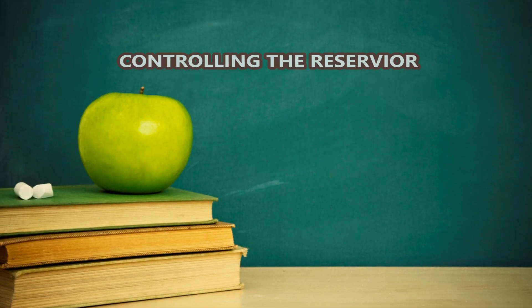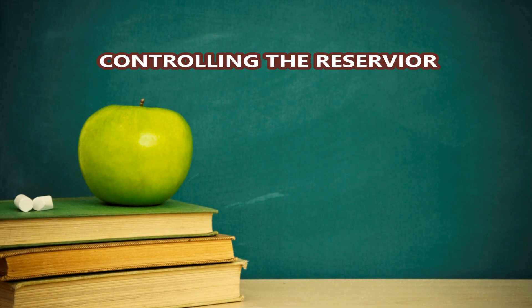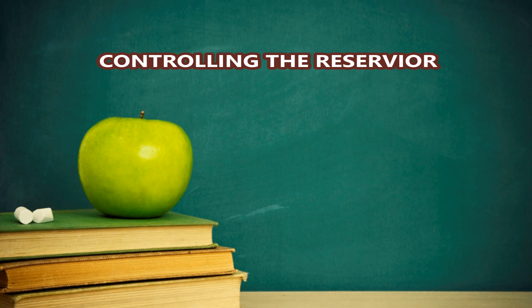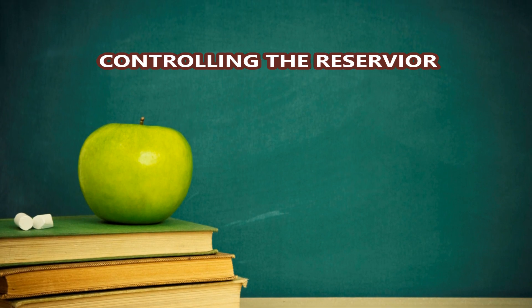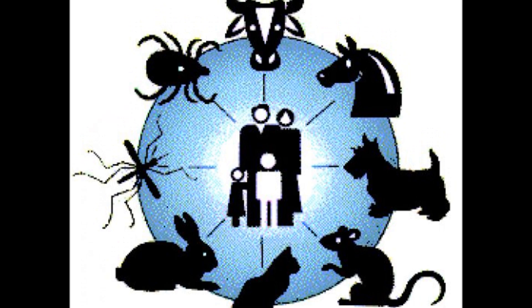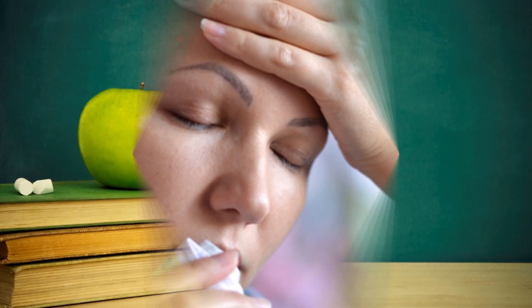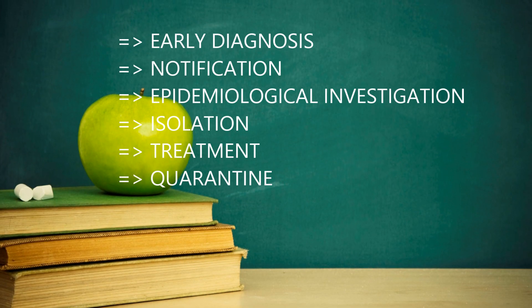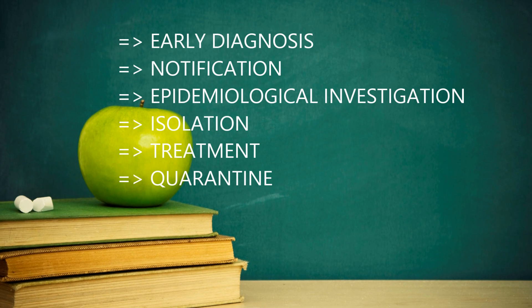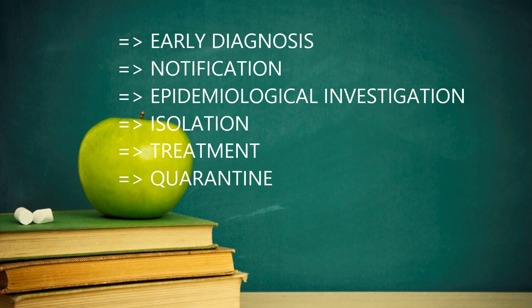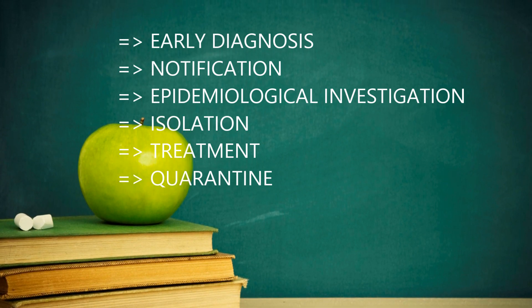Controlling the reservoir: Elimination of the reservoir is considered the most desirable control measure. However, this can be achieved easily in cases of animal reservoirs, but for human reservoirs, special measures are needed. These comprise early diagnosis, notification, epidemiological investigation, isolation, treatment, and quarantine.